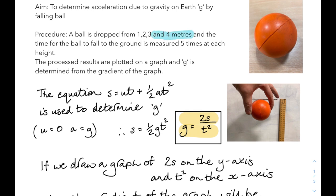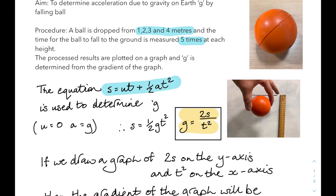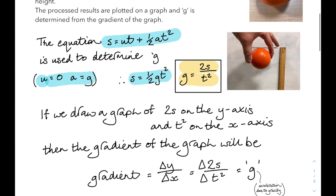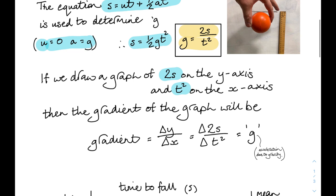We alter the procedure so that a ball is dropped from 1, 2, 3, and 4 metres, timing the fall five times at each height, then plot a graph to find g from the gradient. Using s = ½gt², since u = 0, we get g = 2s/t². Drawing a graph with 2s on the y-axis and t² on the x-axis means the gradient — change in y over change in x — equals g, the acceleration due to gravity.